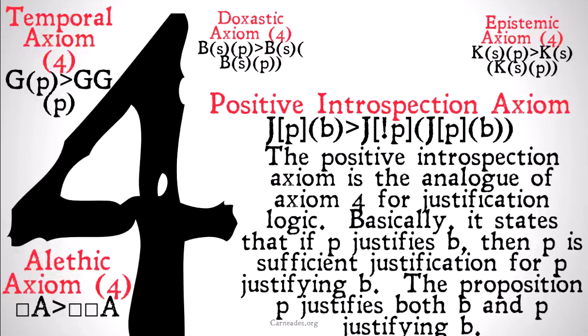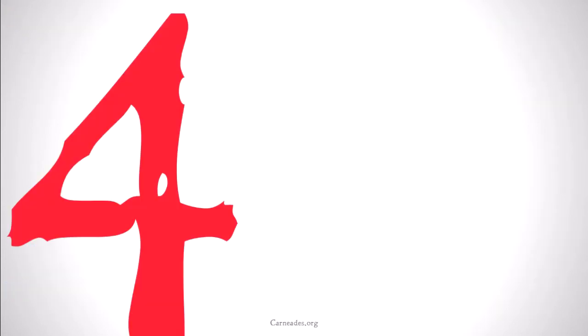Proposition P justifies both B and P justifying B. If you're curious as to what I mean by sufficient justification, check out the previous video on the meta-explanation operation, which is that exclamation point in the axiom up there.